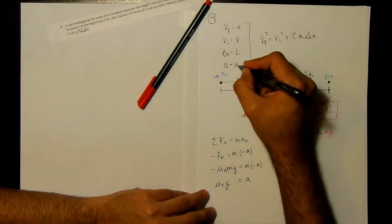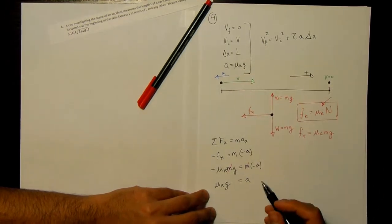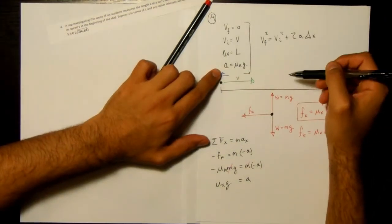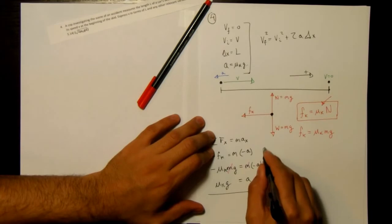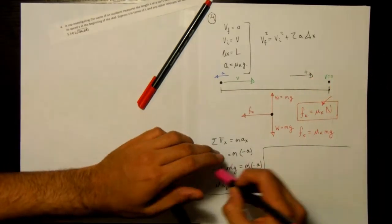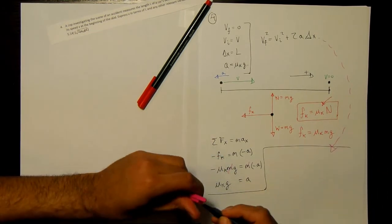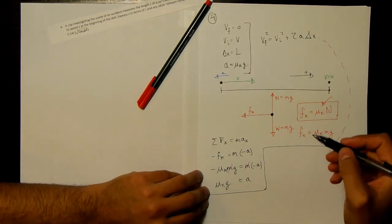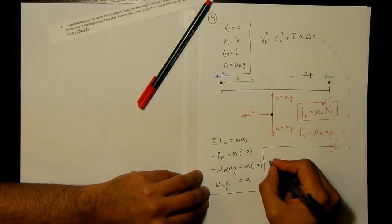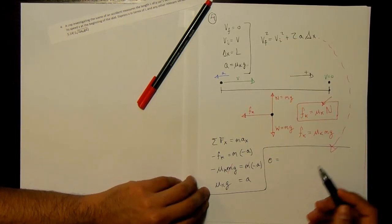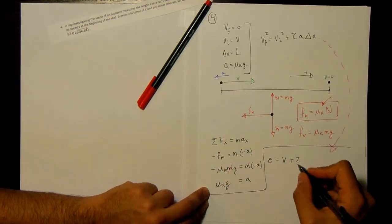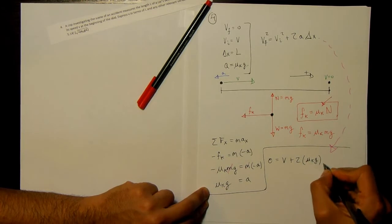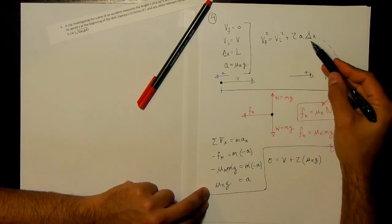So now we have the answer to this part up here. And we can actually put that into our equation. So once again, what we wanted to solve for is this initial velocity. So I'm going to bring this down. But I'm going to write in what I know, which is that the final velocity is 0. 0 squared is 0. The initial velocity is v plus 2. And I know that the acceleration is mu k g. Mu k g. Mu k g. And delta x. Instead of writing delta x, we're writing l.